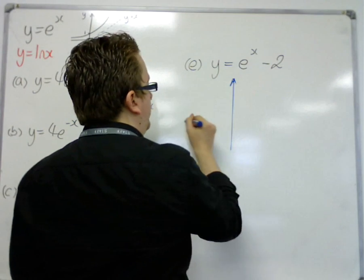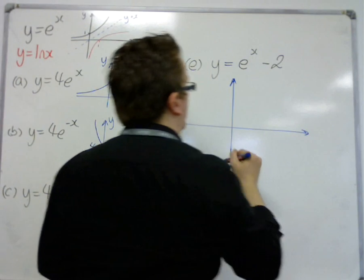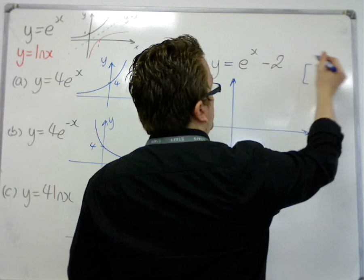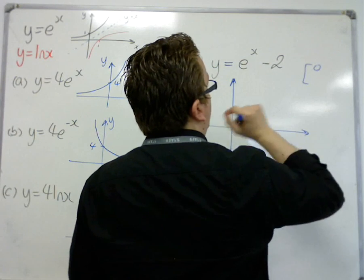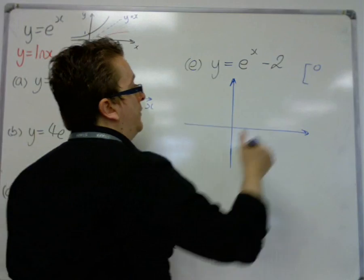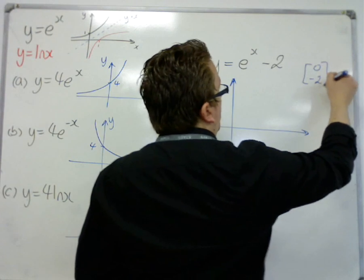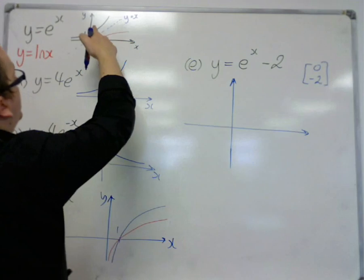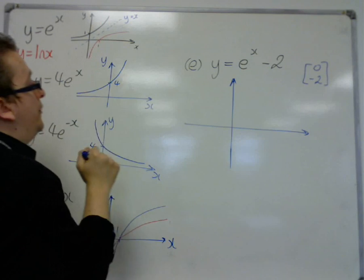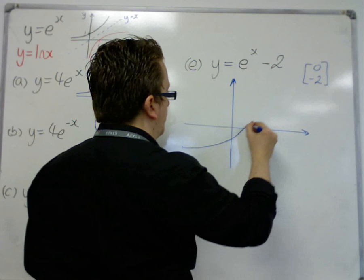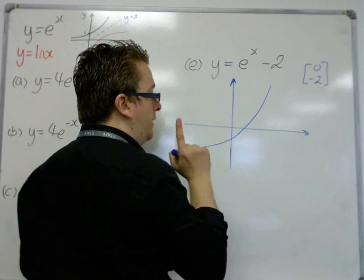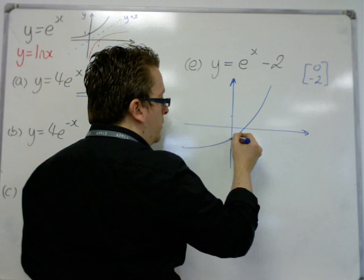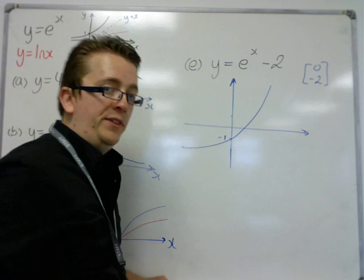Then, this is a translation by the vector, because x hasn't changed, that's 0, but it's the y that's changed. y has been replaced with y plus 2, so the translation vector is 0 minus 2. So, e to the x has been translated downwards by 2, so it will now look something like this. So, instead of going through 1, it'll go through minus 1, because it's taken two steps downwards.